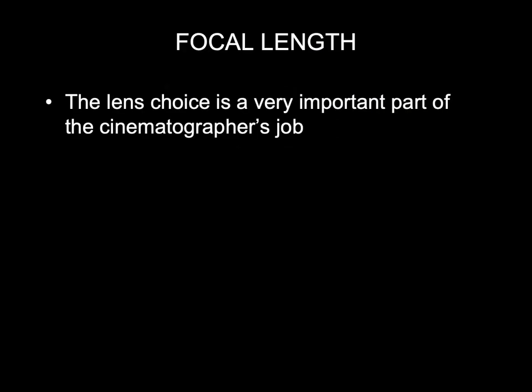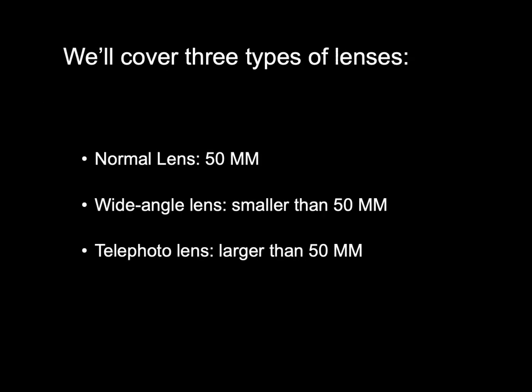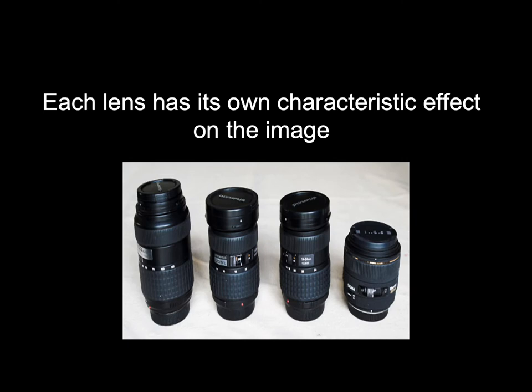Focal length. The lens choice is a very important part of a cinematographer's job. We'll cover three types of lenses: a normal or 50mm lens, a wide-angle lens which is smaller than 50mm, and a telephoto lens that's larger than 50mm. Be sure to read about this in Chapter 1, as it covers the topic in greater detail. Each lens has its own characteristic effect on the image.